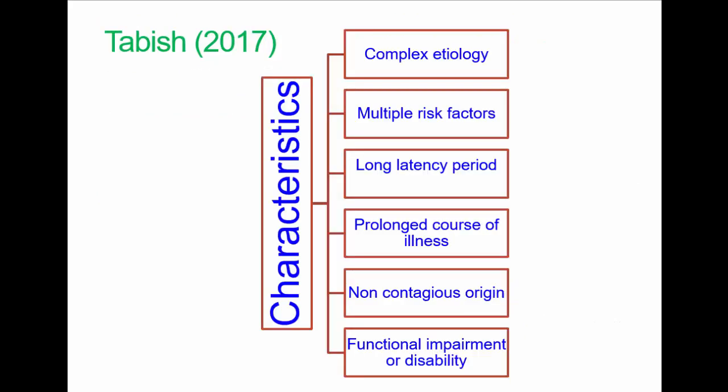This is from Tabish, 2017. He proposed these characteristics of NCDs. Etiology is the study of causation or origin of diseases. Their complexity is reflected in models like causal pies, and we notice a range of issues which may be potentially of concern here.